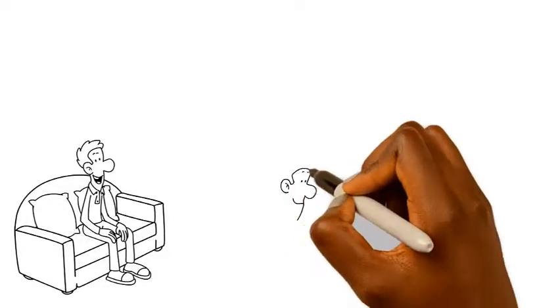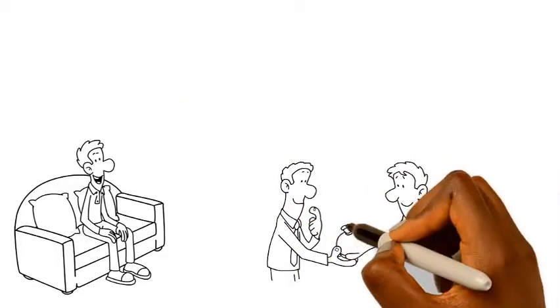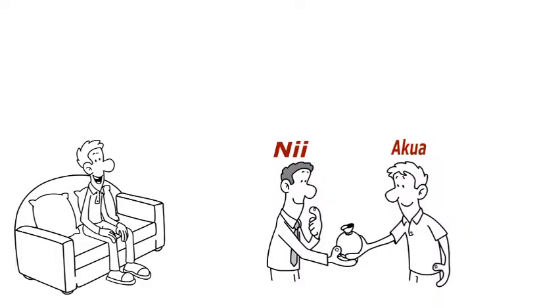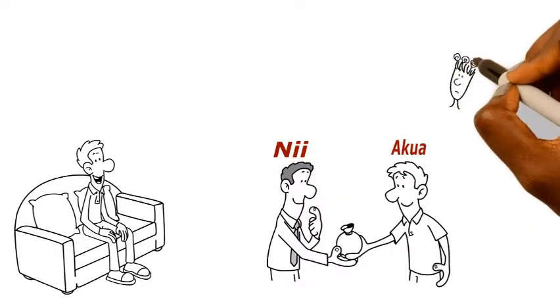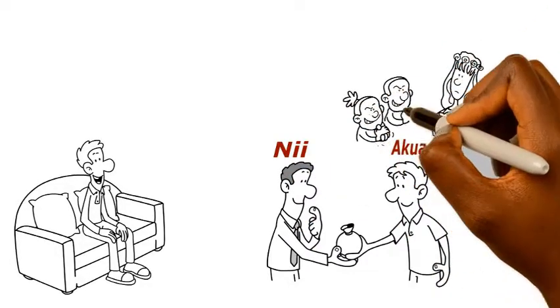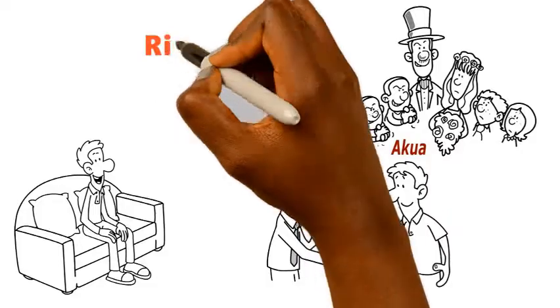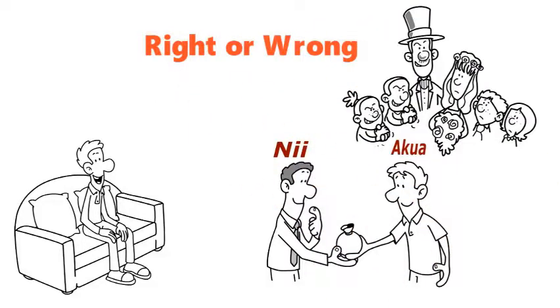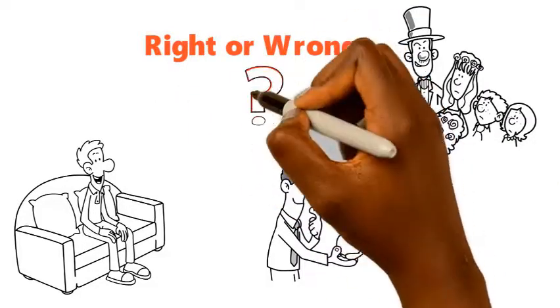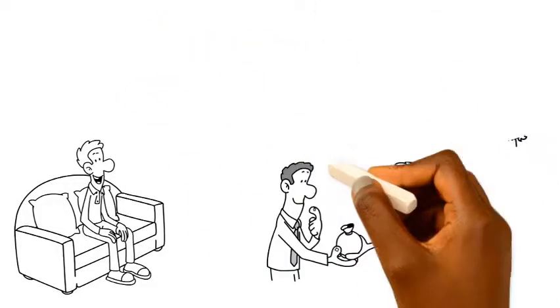Scenario 1. Ni's family pays Ikea's family to agree to the marriage of Ni to Ikea without Ikea's consent. Do you think it is right or wrong? And why do you think it is right or wrong?